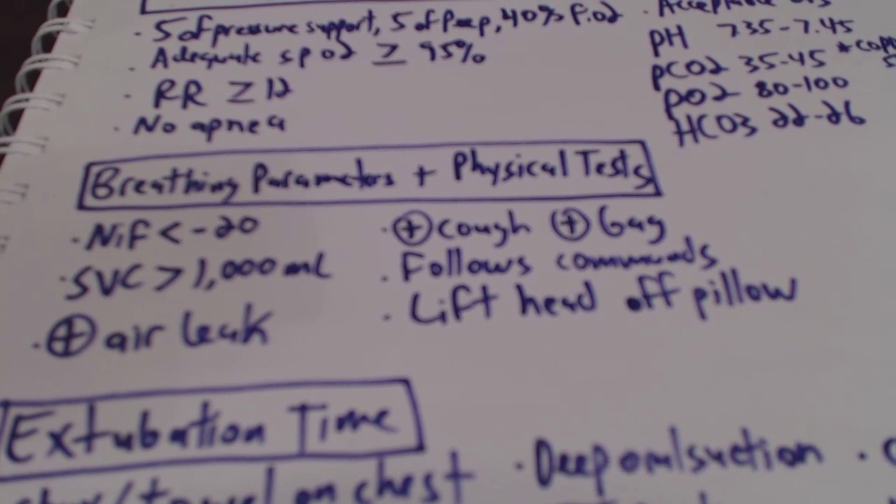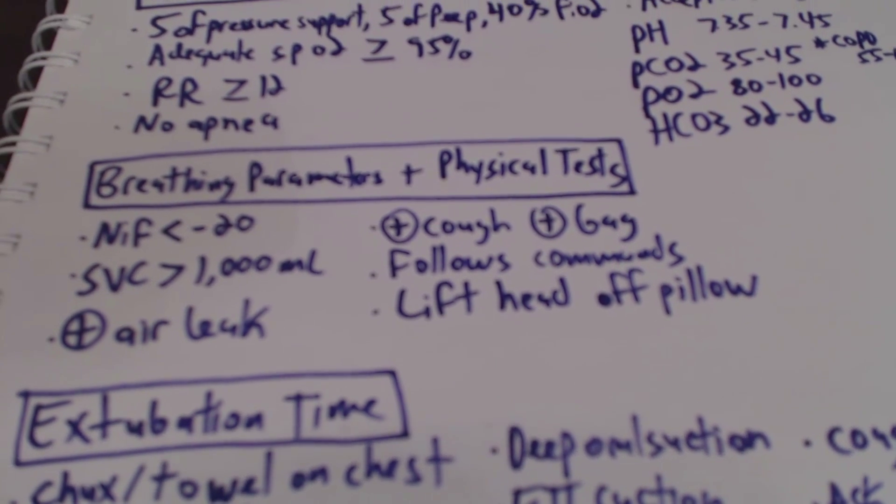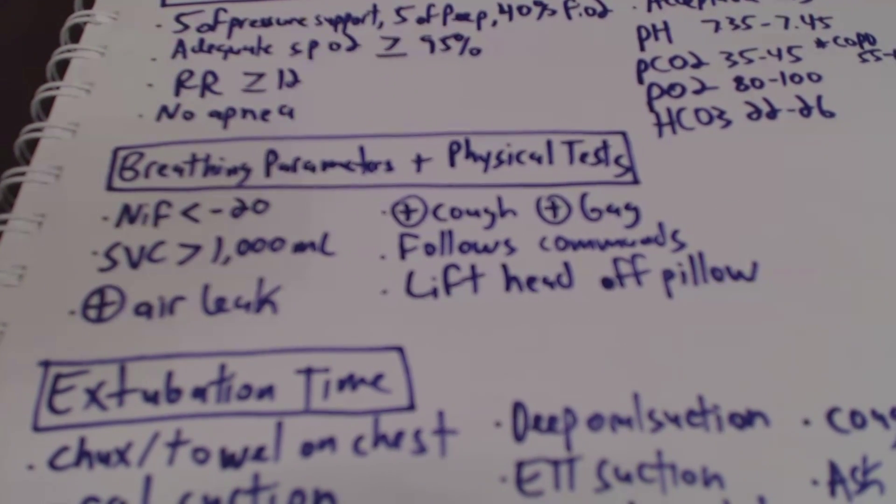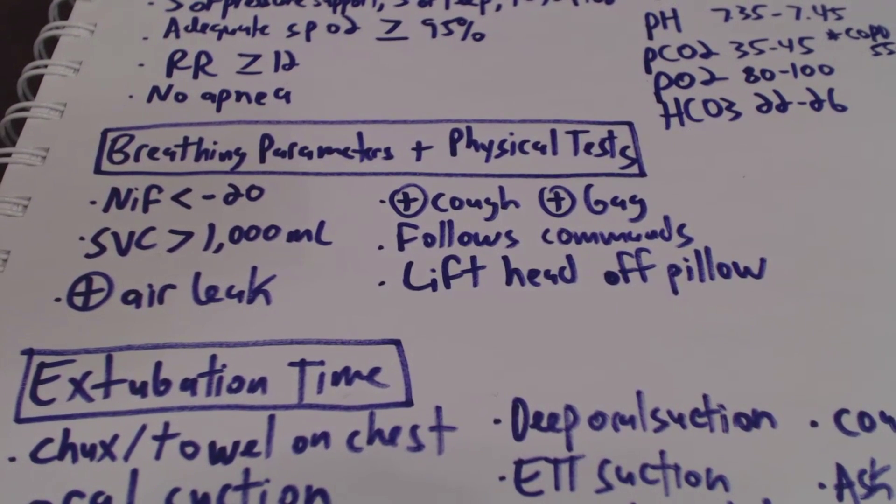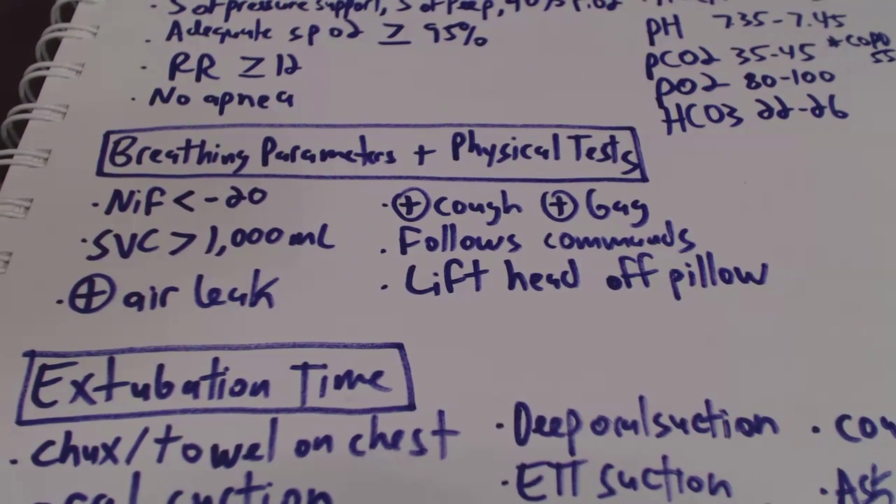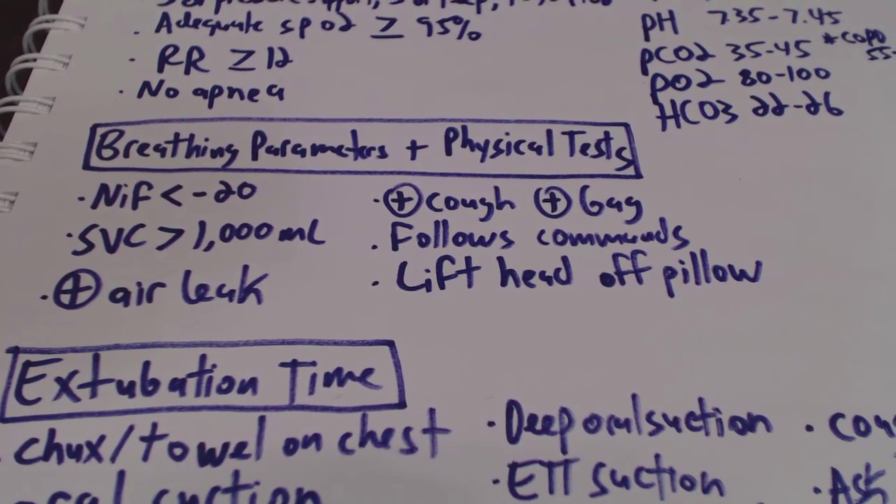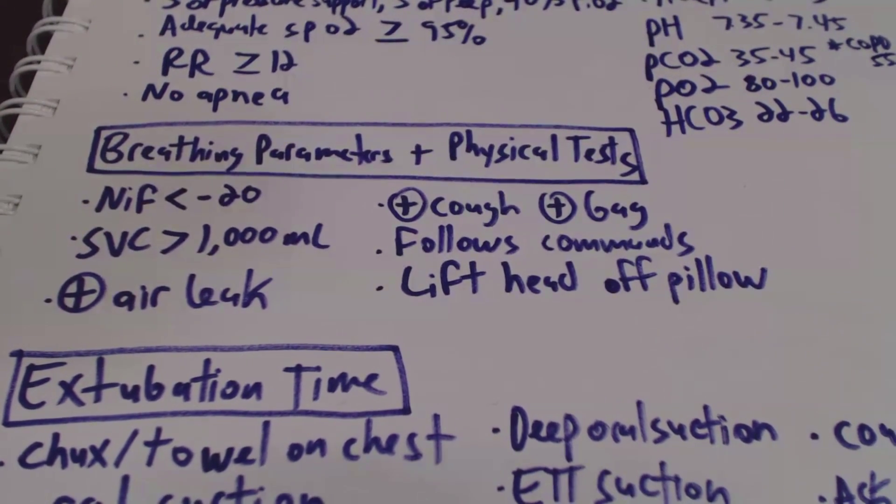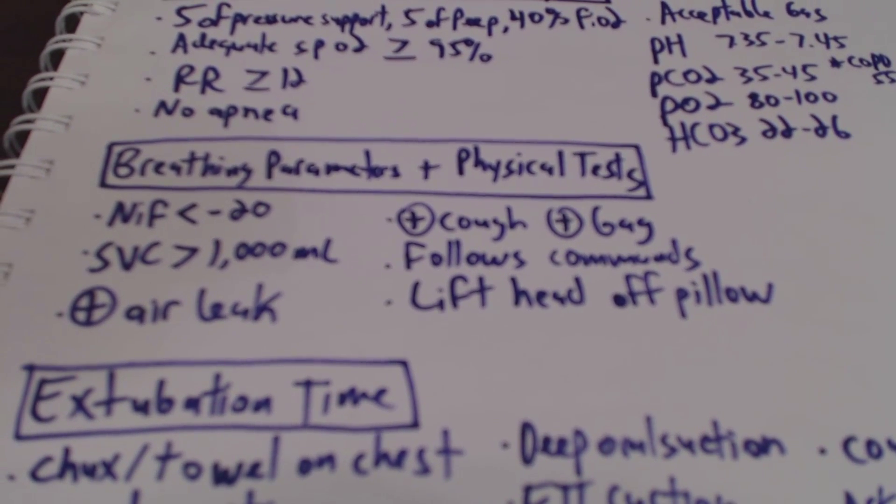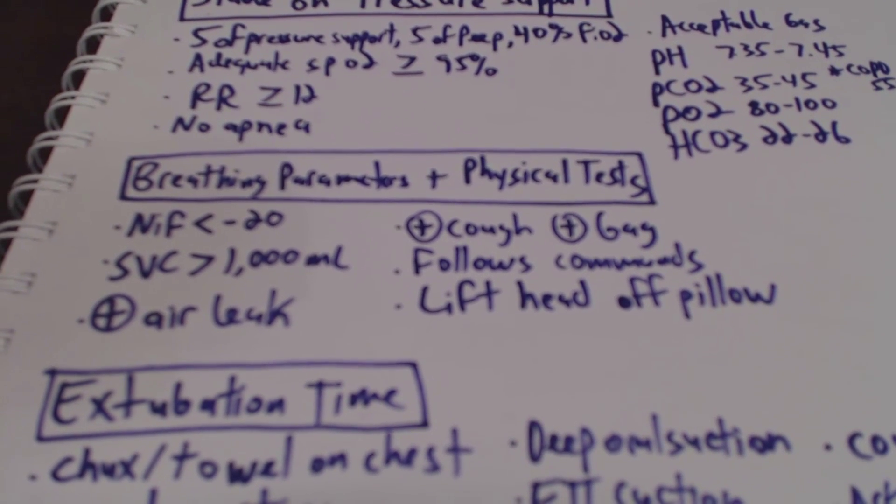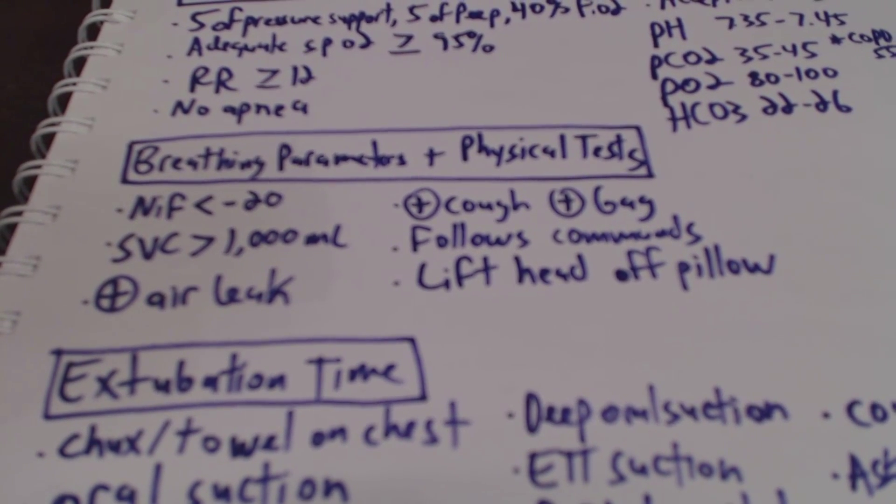Once all of that is done, we're going to be looking at breathing parameters and physical tests. For this, we want a NIF of less than negative 20, and the NIF is the negative inspiratory pressure or force, and that is a measurement of respiratory muscle strength and ventilatory reserve. We also want to make sure that the patient has an SVC, or a slow vital capacity of greater than 1,000 mLs. SVC is a measurement of air that a patient can exhale after they inhale as deeply as possible.